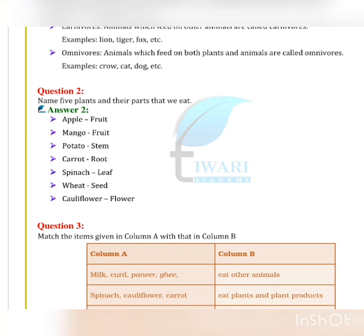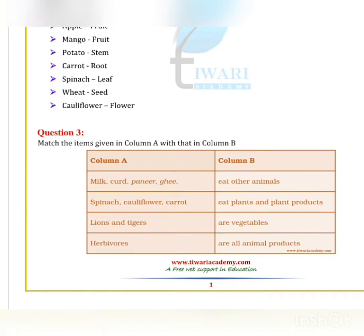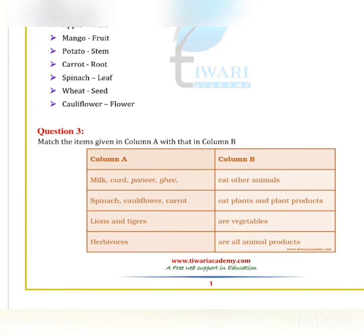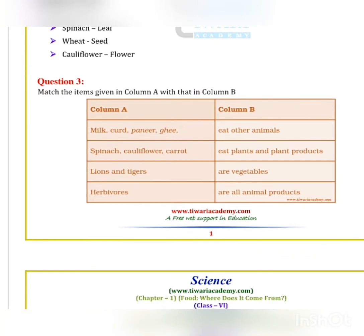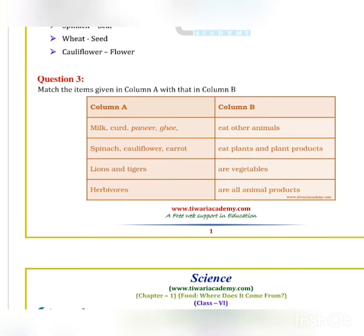Question number 2: Name five plants and the parts that we eat. Apple — fruit; mango — fruit; potato — stem; carrot — fruit; spinach — leaf; wheat — seed; cauliflower — flower.